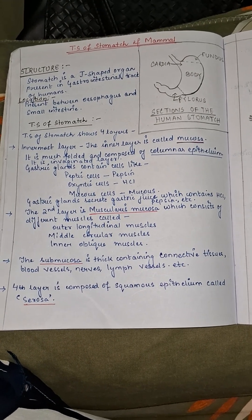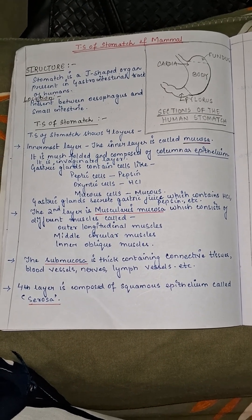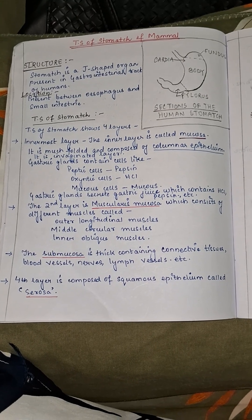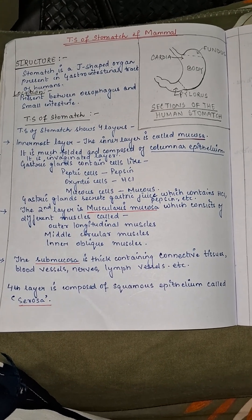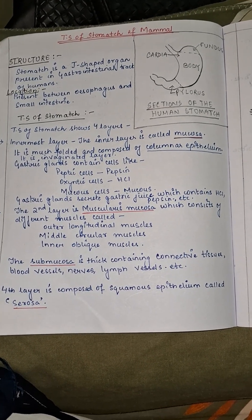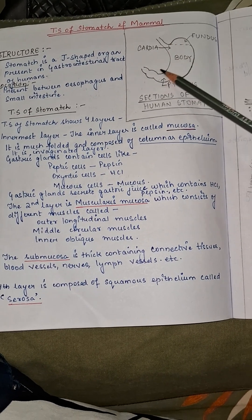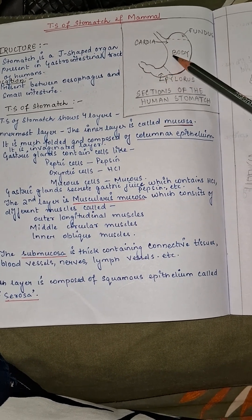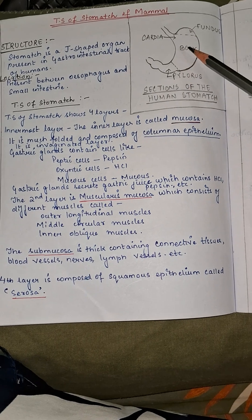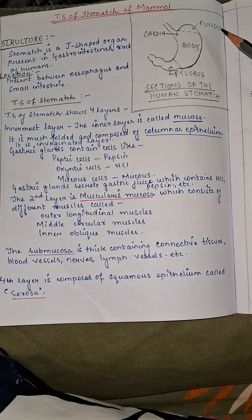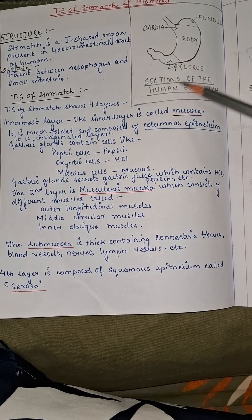Hello everyone, welcome back to my YouTube channel. In this video we will discuss the topic: digestive system of mammal. Basically, what is a stomach? Stomach is a J-shaped organ which is present in the gastrointestinal tract of humans, in the GI tract, in between the esophagus and the intestine.